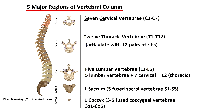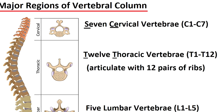The first region is the cervical region, which consists of seven cervical vertebrae making up the neck, abbreviated as C1 through C7. Anatomists also call this the cervical spine, and seven and cervical both start with the same 'S' sound, so that can help you remember there are seven cervical vertebrae.